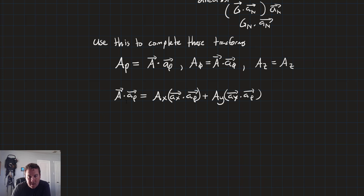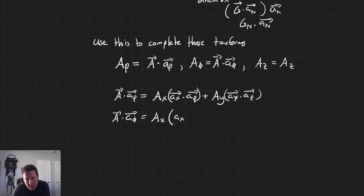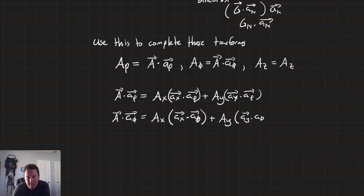We have each component dotted with the target unit vector. Similarly, A · â_theta = Ax·(â_x · â_theta) + Ay·(â_y · â_theta).